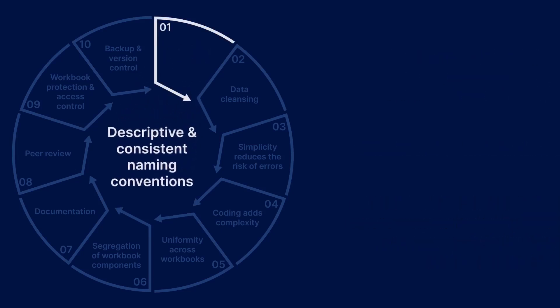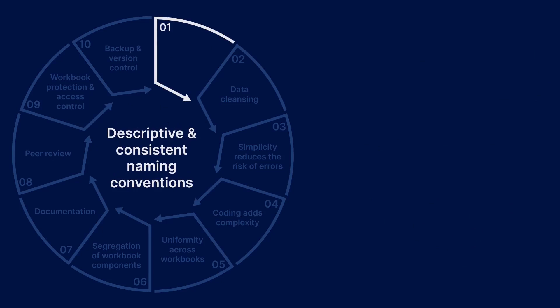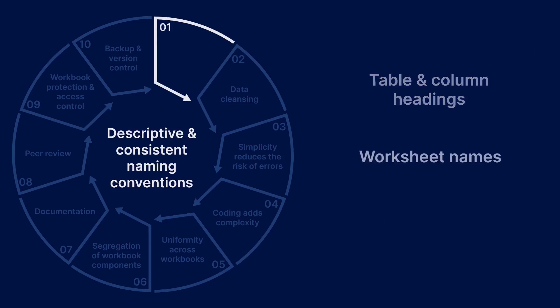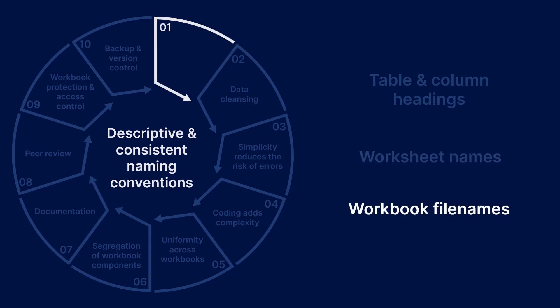Step 1: Use descriptive and consistent naming conventions for table and column headings, worksheet names, and workbook file names. If you're using dates in your workbook file names, consider using the ISO 8601 date format, as this will make sorting your files by date much easier.